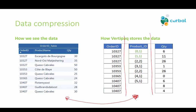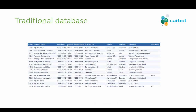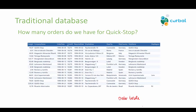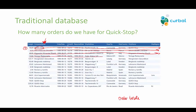For today's video we are going to go through a slightly bigger table and explain first how a traditional database would work. Here we have the order table from the Northwind database. Let's say that we want to answer this question: how many orders do we have for Quickstop? Quickstop is the name of a customer. For a traditional database model, the engine will have to read all rows and all columns in order, going through each one until it finds what it needs.